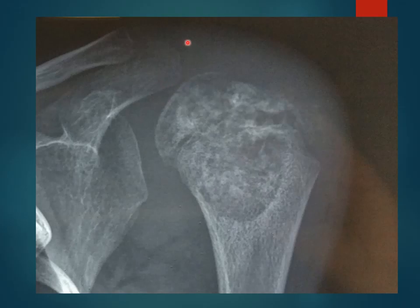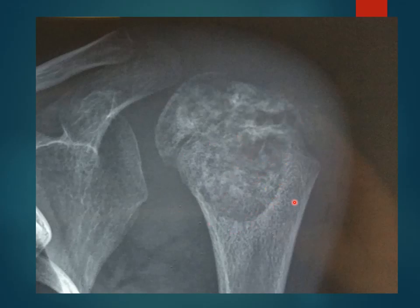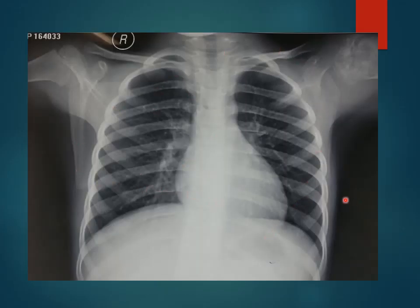Other structures like the acromion process, coracoid process, and glenoid cavity appear normal; however, there is mild increase in the glenohumeral distance, which may be due to effusion of the joint. So we are dealing with a lesion that has well-defined sclerotic margins and is expansile and lytic — a non-aggressive type — but it also has some features of aggressiveness, like cortical breach and destruction of the upper part. Most features suggest a benign lesion.